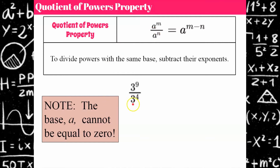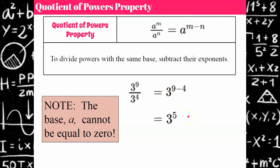Here's an example. We have three to the ninth over three to the fourth, which is equivalent to three to the ninth subtract four, or three to the fifth, which is equivalent to 243 if you simplify one step further.